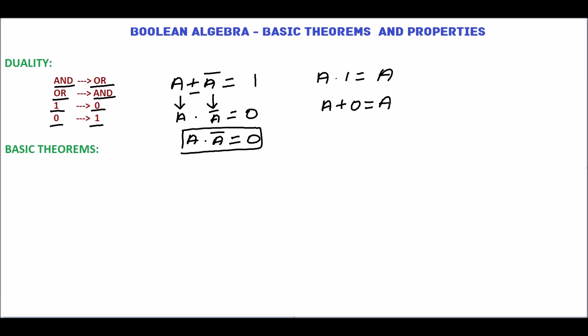In Boolean algebra, the dot indicates the logical AND operation and the plus indicates the logical OR operation.